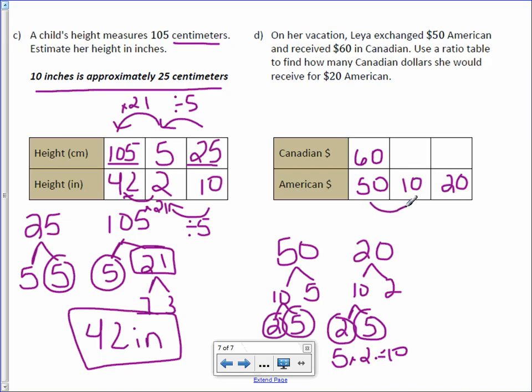How do we get from 50 to 10? We divide by 5. Do the same up top. 60 divided by 5 is 12. To get from 10 to 20, we times 2. Do the same. 12 times 2 is 24. So she would get $24 Canadian.